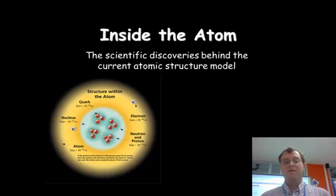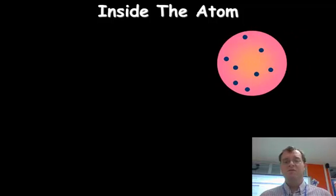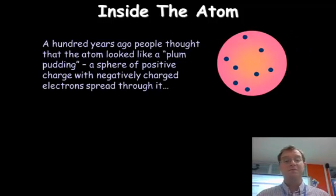And we'll start off with the thinking of about 100 years ago. About 100 years ago, the science which was in place required the idea of an atom to look a little bit like a plum pudding. It was described as the plum pudding model, and it was a sphere of positive charge with some negatively charged electrons spread through it. And this was the dominant theory at the time.